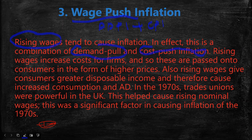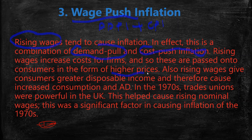When raw materials increase, the cost of a firm increases. As the total cost increases, producers pass the burden on to consumers through higher prices of the final product. Additionally, rising wages give consumers greater disposable income, and therefore cause increased consumption and demand.